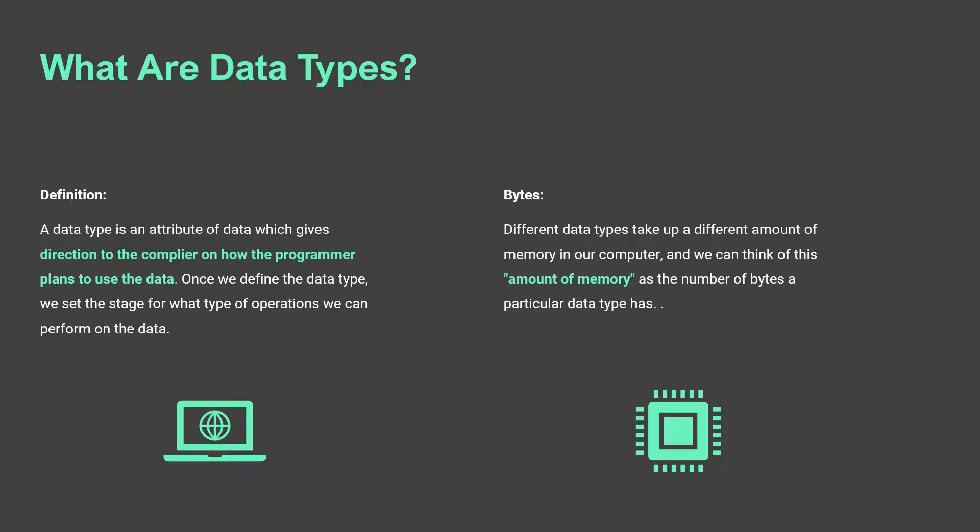A data type is an attribute of data which gives direction to the compiler on how the programmer plans to use the data. Once we define the data type we set the stage for what type of operations we can perform on the data. It's related to these ideas called operators, and certain operators can only be used on certain data types, or if they can be used on multiple data types they have very different outcomes. The data type is really just setting the stage — telling the computer how we're planning to use this information and what type of operations we want to perform on it.